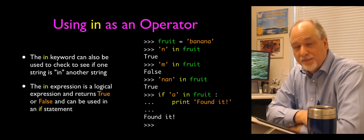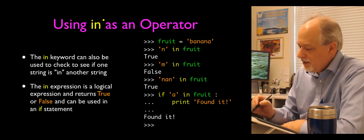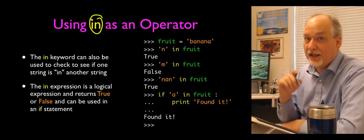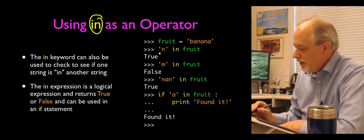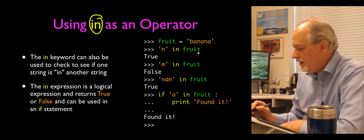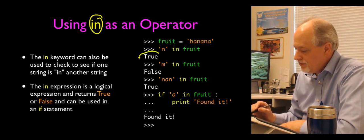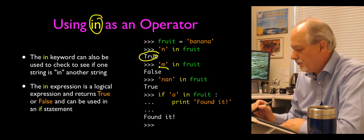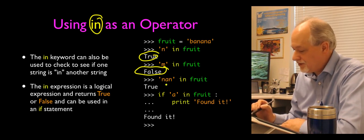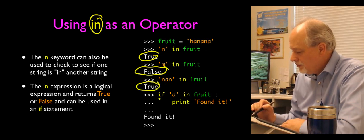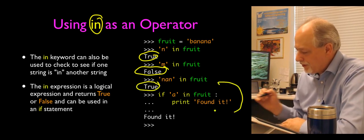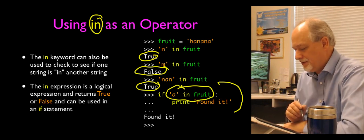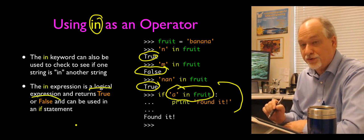Another thing you can do is ask questions about a string using the 'in' operator. This is a little different from how we use it in a for loop — this is a logical operation asking a question like less than or greater than. So with fruit as banana: is 'n' in fruit? The answer is True. Is 'm' in fruit? False. And this can be a string, not just a single character — is 'nan' in fruit? True. This logical expression can appear in an if or while, et cetera.